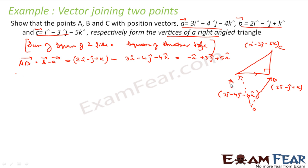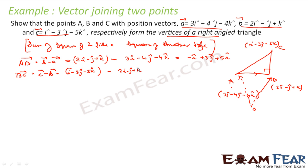Similarly, BC vector = C − B. C vector is i − 3j − 5k, minus B vector 2i − j + k. Solving: (1−2)i = −i, (−3+1)j = −2j, (−5−1)k = −6k. So BC vector = −i − 2j − 6k.